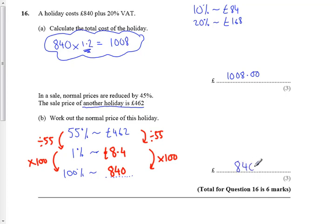So, the original price was £840, except this one we had to include the VAT. So, they're just kind of testing you see and understand what's going on. The price was 55% of the original and we want to work out what the original price was. We go down to 1% up to 100.